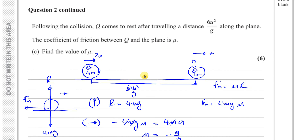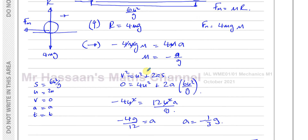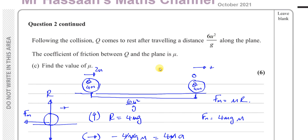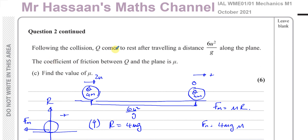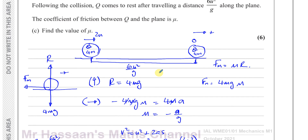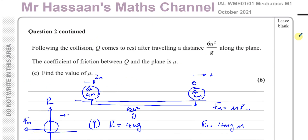The answer to part (c) is μ = 1/3 — that's the coefficient of friction between the plane and Q. This question covers a lot of different topics: parts (a) and (b) use momentum and impulse, part (c) uses SUVAT and friction. There are other questions from this paper in the playlist, along with playlists on momentum/impulse, kinematics, and friction. Thanks for watching and subscribe to the channel!